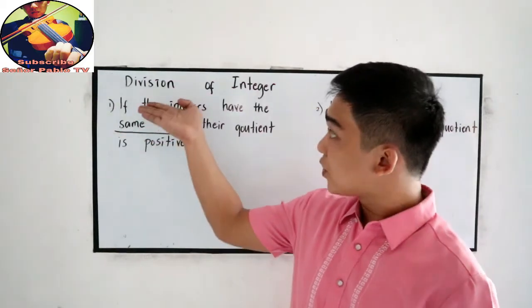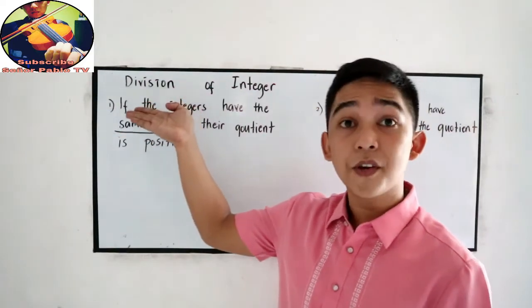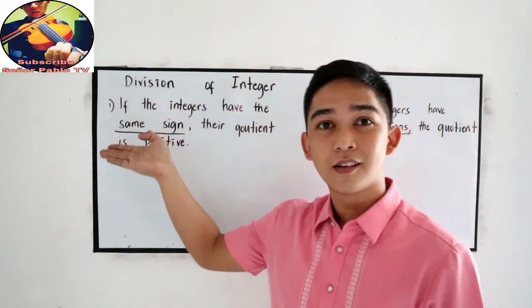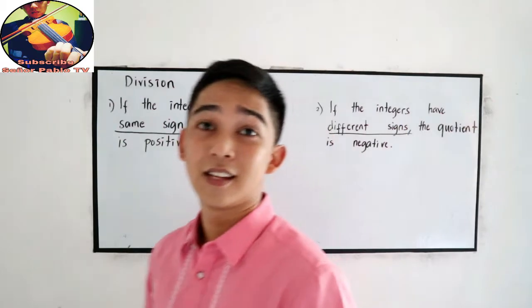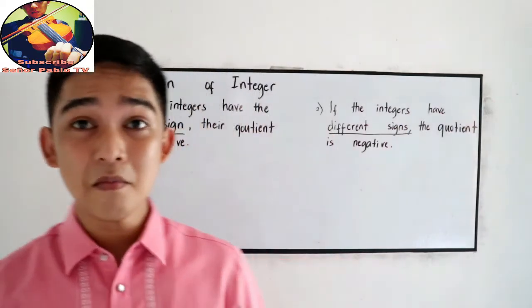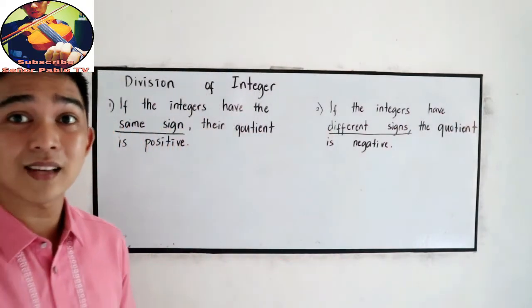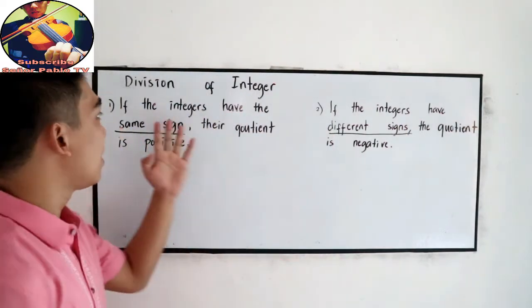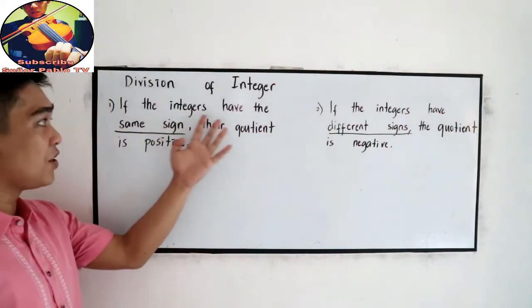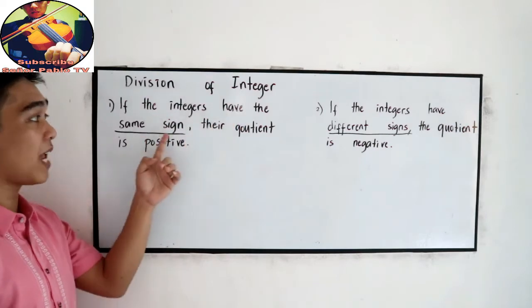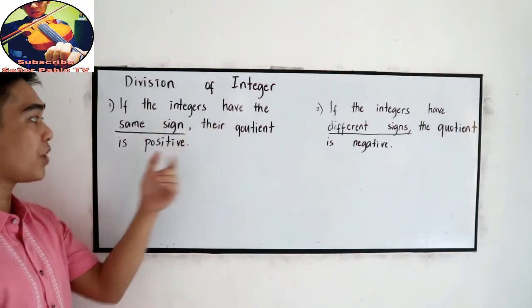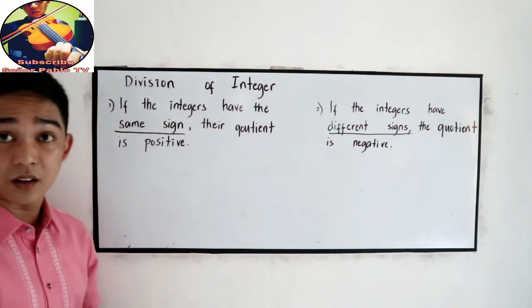Our last operation: division of integers. This is the same rule as our multiplication. If the integers have the same sign, their quotient is positive.